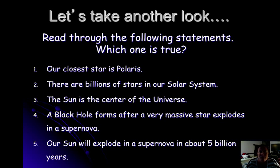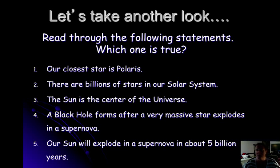Let's go back and check which statement was true. Our closest star is Polaris? No — our closest star is the sun. There are billions of stars in our solar system? No — there's just one, the sun. The sun is at the center of the universe? No — the sun is at the center of our solar system. A black hole forms after a very massive star explodes in a supernova? That is correct. And finally: our sun will explode in a supernova in about five billion years? Not true — it will become a red giant, blow out into a planetary nebula, become a white dwarf, and then a black dwarf. That is the simple death of our star, the sun. See you next time.